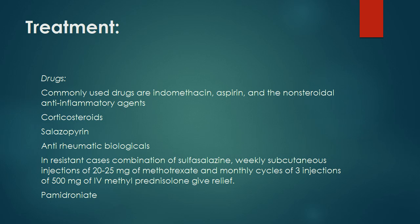Corticosteroids are not widely used except for limited indications. Sulfasalazine in doses of 500 mg every 6 hours orally, given over prolonged periods, helps to relieve pain of peripheral arthritis and possibly of the axial lesion too. Anti-rheumatic biologicals have been used in the treatment of intractable spondyloarthropathies. Infliximab given in a dose of 5 mg/kg at weeks 0, 2, and 6 produced remarkable improvement when followed up to one year. However, reactivation of tuberculosis was seen in 50% of patients. In resistant cases, combination of sulfasalazine, weekly subcutaneous injections of 20–25 mg of methotrexate, and monthly cycles of 3 injections of 500 mg of methylprednisolone give relief. Pamidronate 60 mg given as a slow infusion has been tried with encouraging results.